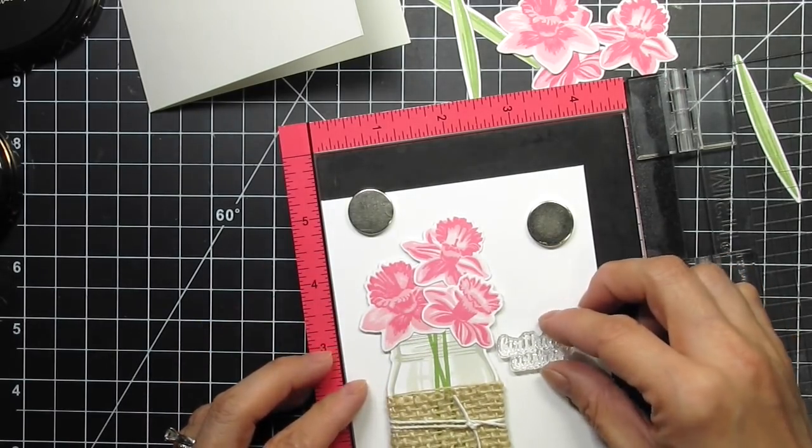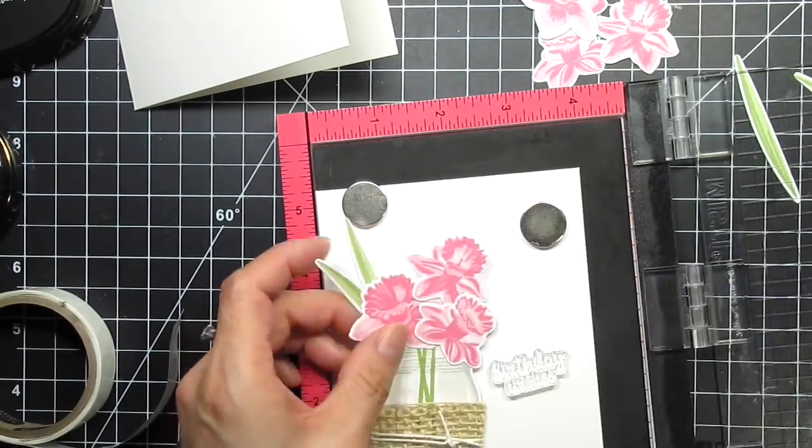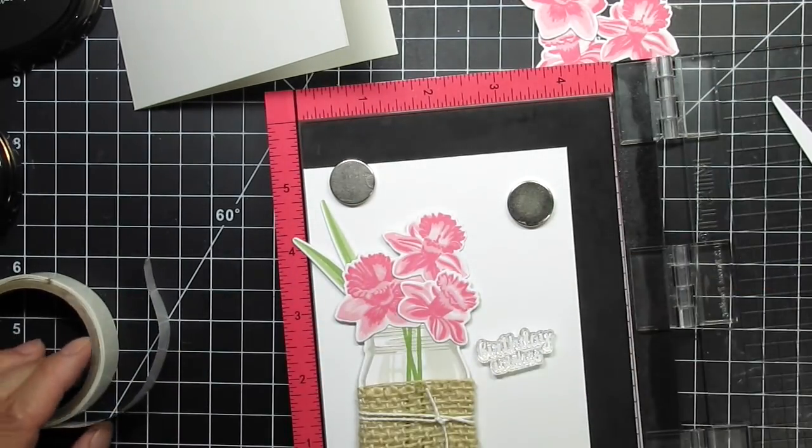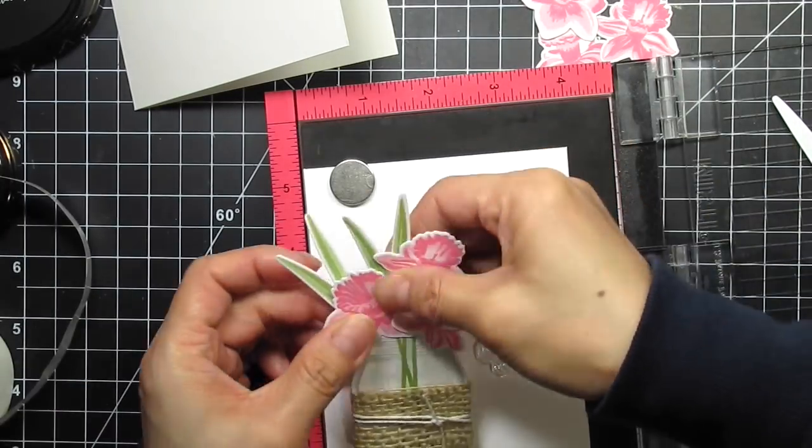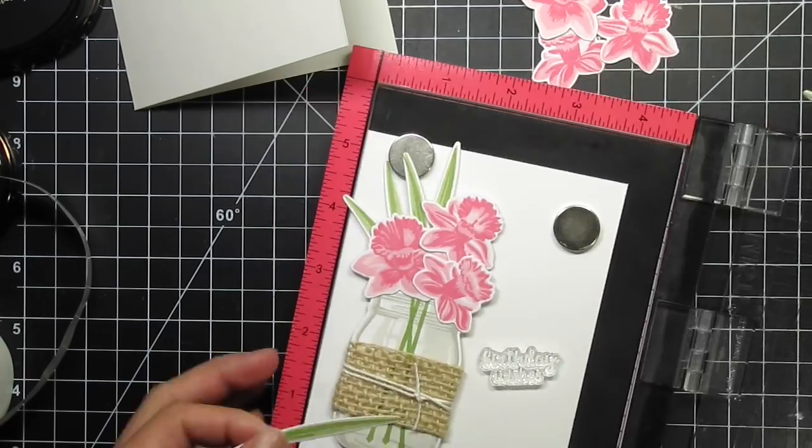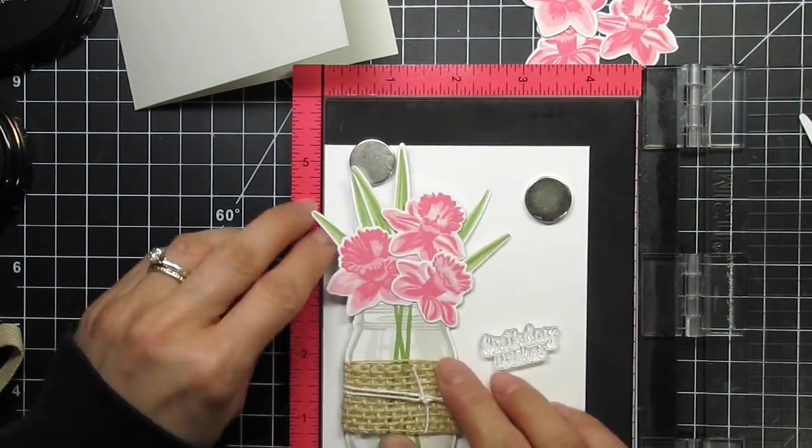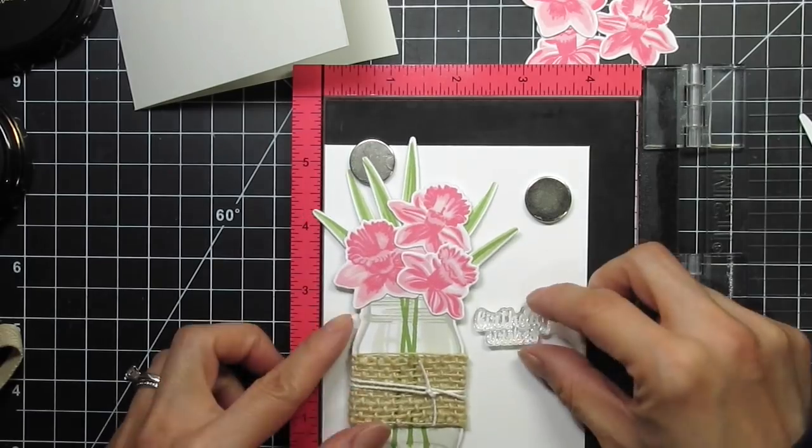When the flowers and jar are assembled as a single unit, then I can place the panel back into the MISTI and use the image to gauge positioning of the sentiment. First, I have to add the leaves to the image. The position of the jar on the panel will be quite different once the leaves have been added. Since the leaves are likely to reach the edge of the panel, I hold it over the card base to help me gauge the position of both the jar and the sentiment.